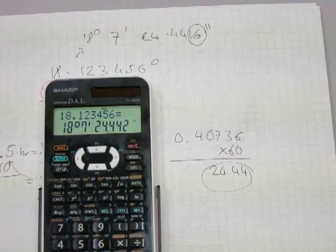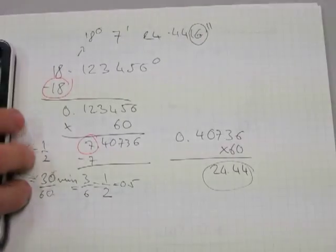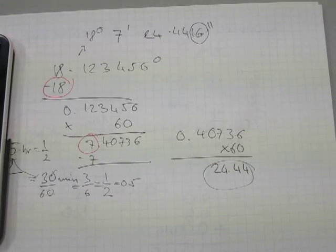So basically that's it, folks. That's how to convert decimal degrees to degrees, minutes, and seconds, and degrees, minutes, and seconds to decimal degrees. Keep practicing until you are proficient at it.